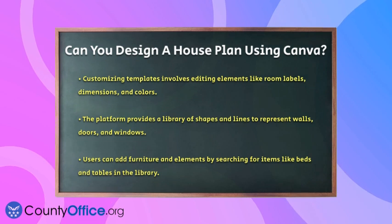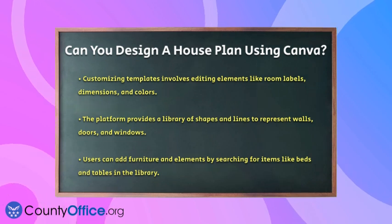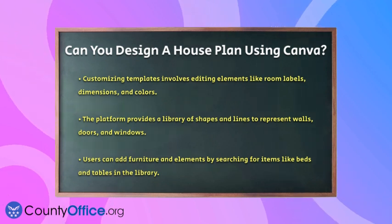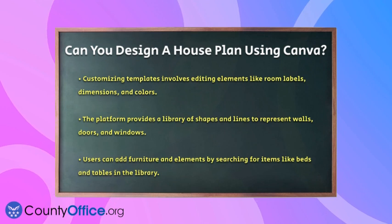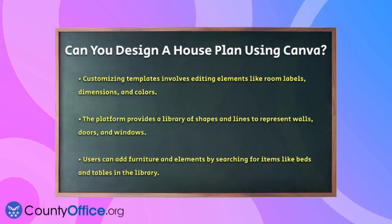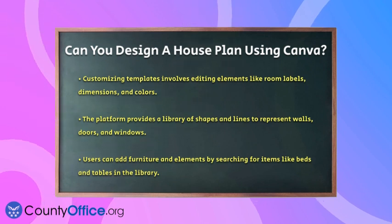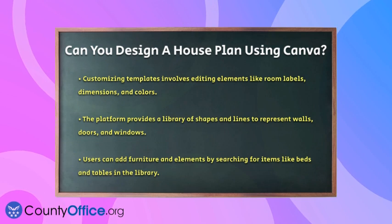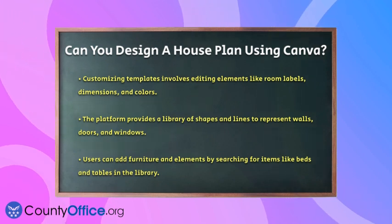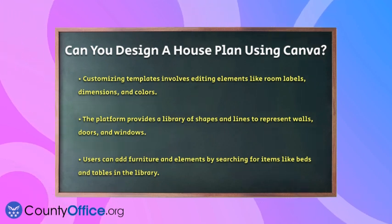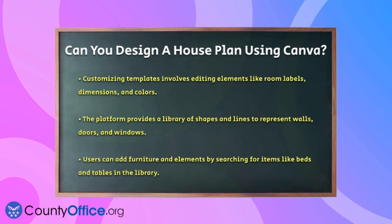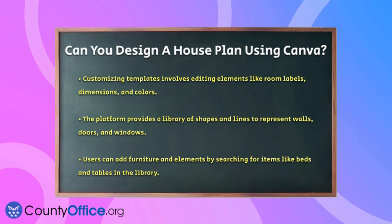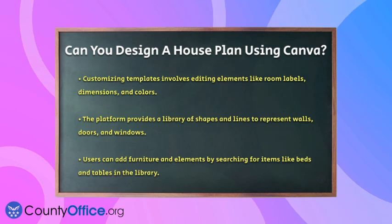Next, you can add furniture and other elements to your design. Search for items like beds, sofas, and tables in the library. Drag and drop these items onto your floor plan and arrange them to ensure everything flows well. This step is essential to visualize how the space will function.